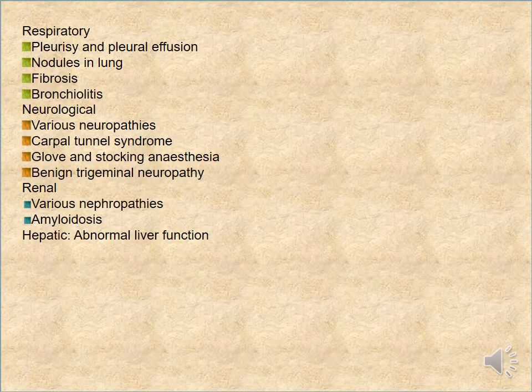Respiratory manifestations include pleuritis, nodular effusion, nodular lung, fibrosis, and bronchiolitis. Neurological manifestations include various neuropathies, carpal tunnel syndrome, glove-and-stocking anaesthesia, and benign trigeminal neuropathy. Renal manifestations include various nephropathies and amyloidosis. There may also be lymphadenopathy and abnormal liver function.